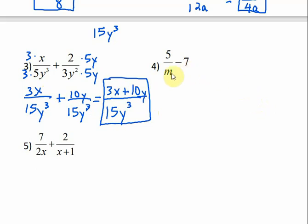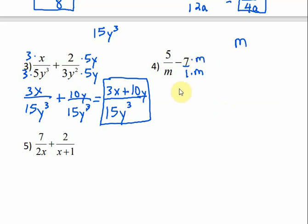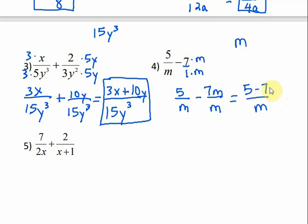In number 4, I have a denominator of m, and then I have a whole number. Remember, we can turn whole numbers into fractions by putting them over 1. So now I have m and 1. If I multiply times 1, it doesn't change anything. So my least common denominator is m. Now to get this to have a denominator of m, I need to multiply both the numerator and the denominator times m. So that gives me 5 over m minus 7m over m. My denominator is m, and I can't combine those because they're not like terms, so it's just 5 minus 7m over m.